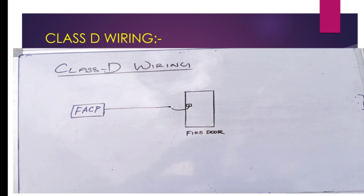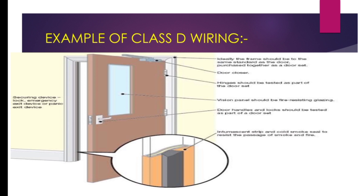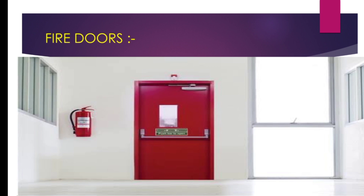When we discuss Class D wiring, it has a fail-safe operating circuit. Fail-safe operation means it is an electrical system so defined that the failure of any component in the system will prevent unsafe operation of the controlled equipment. Class D wiring will not show troubles when there is a single open, single ground, short, short and open, short and ground, open and ground, or communication loss. It will not put anything into fire mode if interrupted.